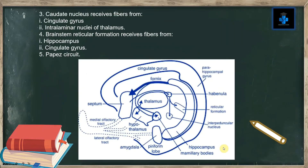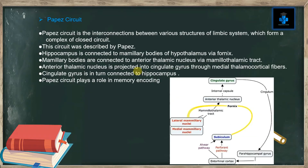Third, the caudate nucleus receives fibers from the cingulate gyrus and intralaminar nuclei of the thalamus. Fourth, the brain stem reticular formation receives fibers from the hippocampus, the cingulate gyrus, and the Papez circuit. Now let's see what the Papez circuit is.